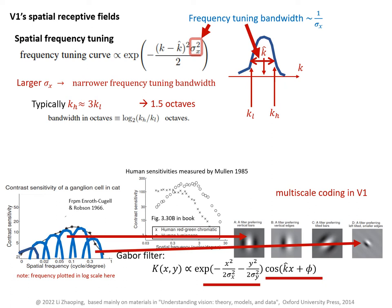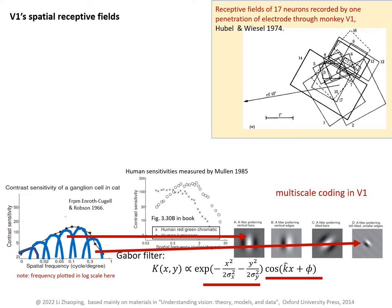Here are 17 example neurons recorded by a single penetration of a recording electrode in monkey V1. This rectangle outlines the receptive field of the 14th neuron; its width and length are larger than 1 degree in visual angle. Here is another neuron with a receptive field smaller than 1 degree in both length and width. These receptive fields partially overlap with each other, and they are at a location 10 degrees from the center of gaze.